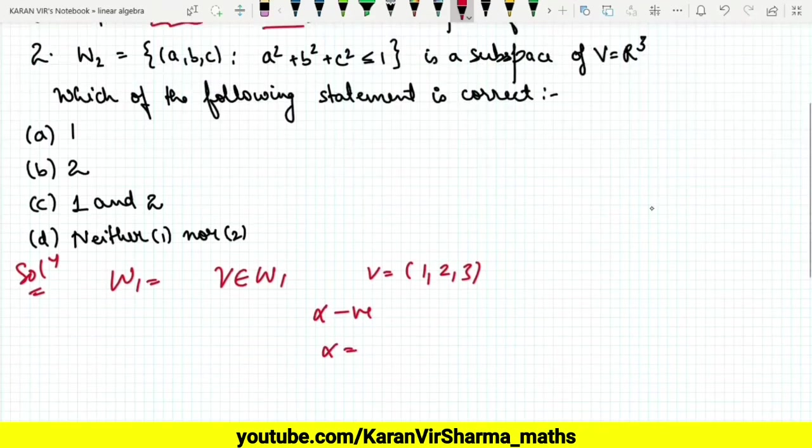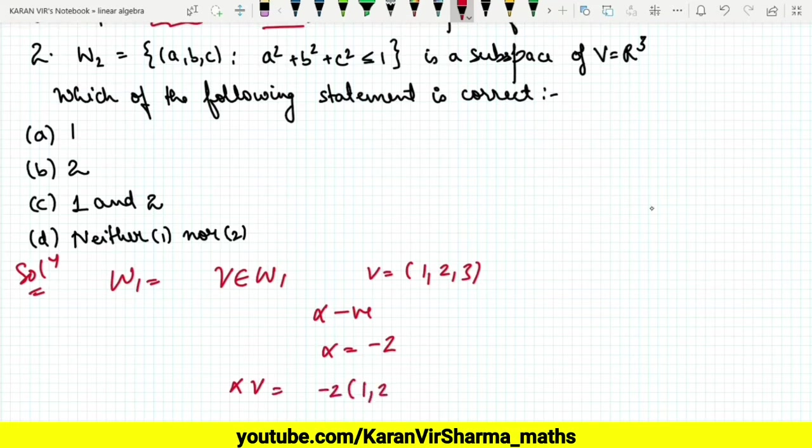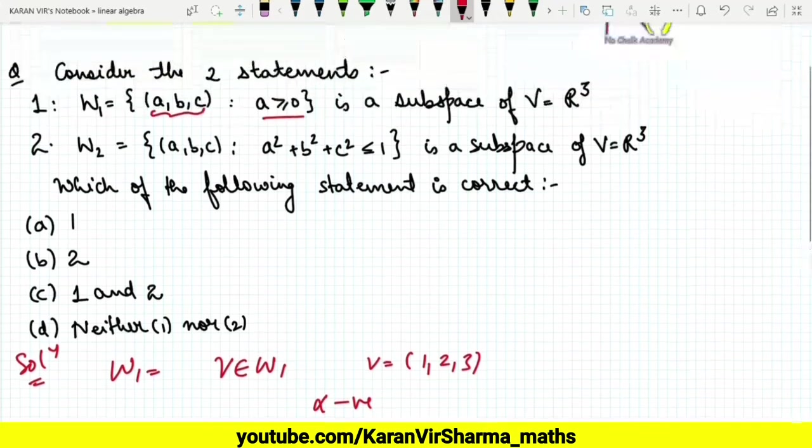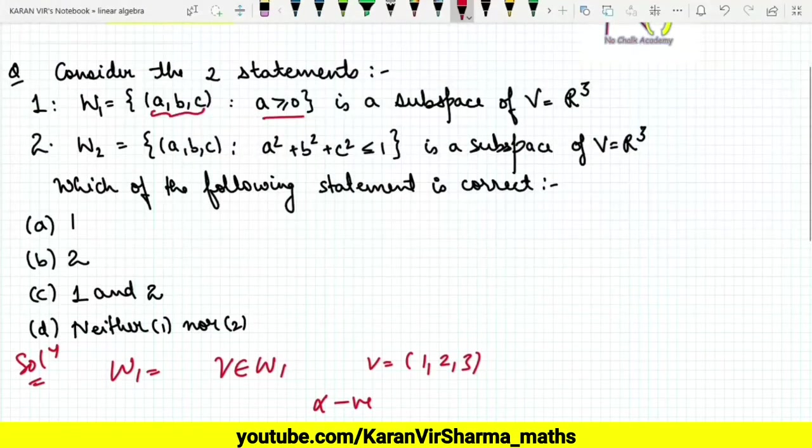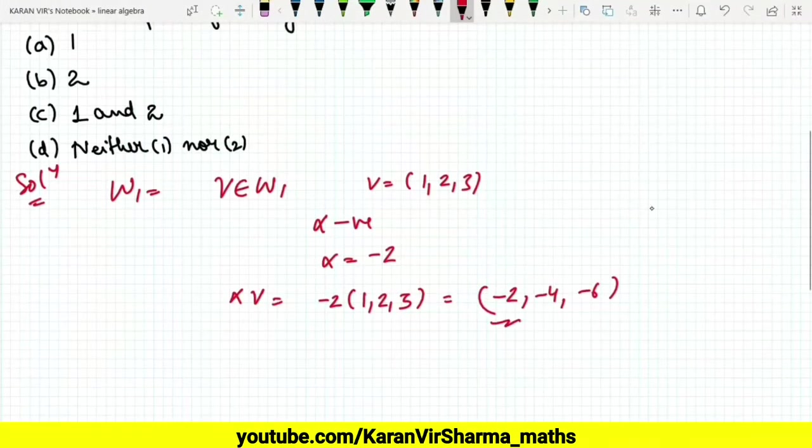Now if you do α times v, that will come out to be -2 times (1,2,3), that is (-2, -4, -6). But our W1 space is such that the first element a should be positive, but here a is negative. So this is not a subspace.